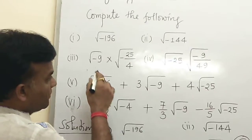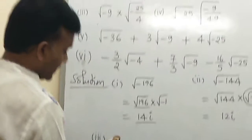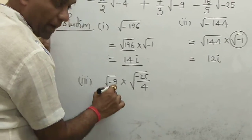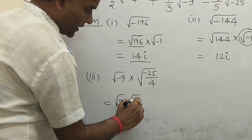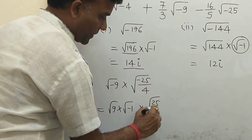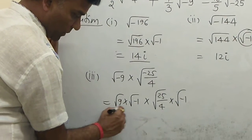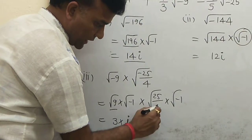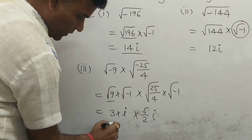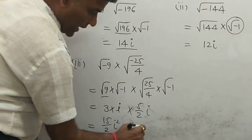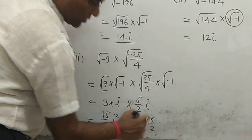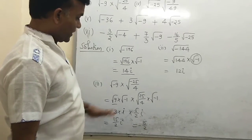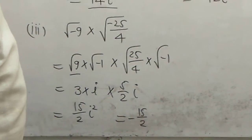Third example: √-9 · √(-25/4). Simplify √-9 = √9 · √-1 = 3i, and √(-25/4) = √(25/4) · √-1 = (5/2)i. Multiplying: 3i · (5/2)i = (15/2) · i² = (15/2) · (−1) = −15/2. The result is −15/2, a real number. Both terms were imaginary but the product is real.